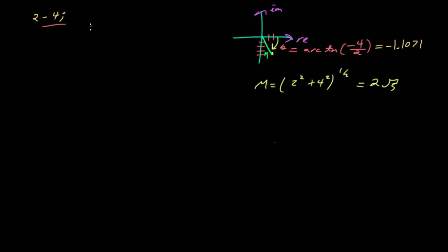Let me just go ahead and write down an answer right here. So an answer that we could come up with is that my magnitude for my polar form is 2 root 5 times e to the minus j 1.1071. So that is one way of writing this.